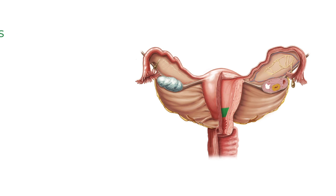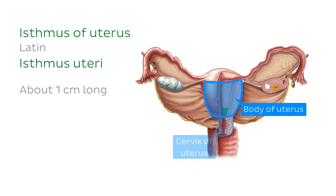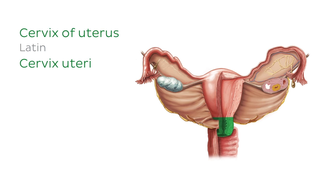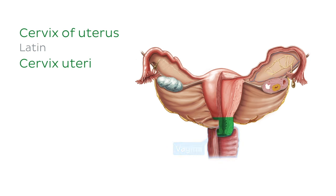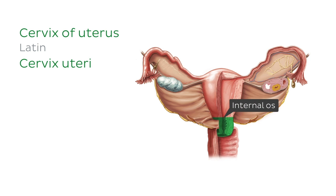Next, we have the isthmus. The isthmus is about one centimetre long, and as you can see, is the constricted part of the uterus between the body and the cervix. Lastly, we have the cervix, which connects the uterine cavity to the lumen of the vagina. The cervix is approximately 2.5 centimetres long and has two openings: the internal os, which opens into the uterus, and the external os, which opens into the vagina.